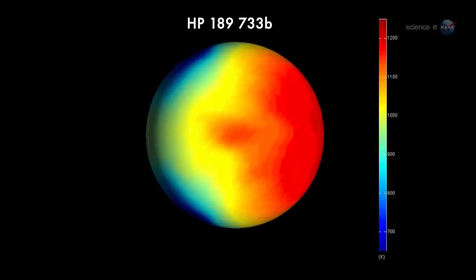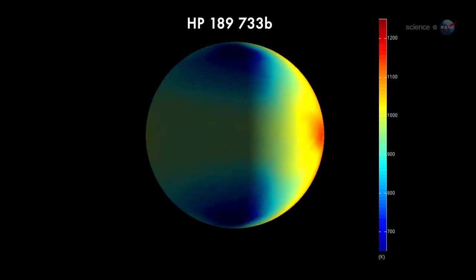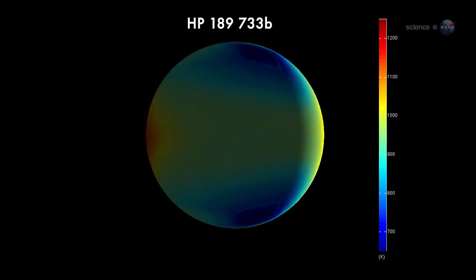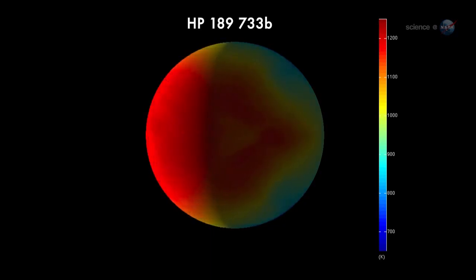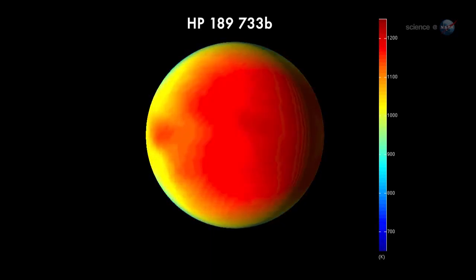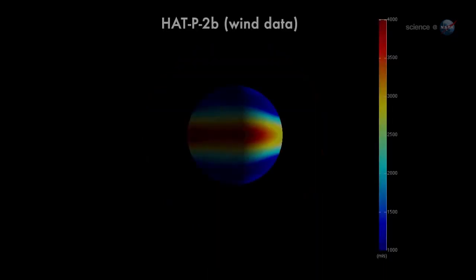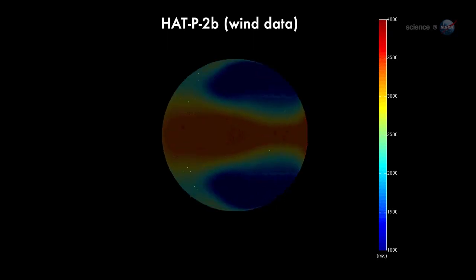These exoplanet maps may seem crude compared to what we're accustomed to on Earth, but they are a fantastic accomplishment considering that the planets are trillions of miles away. The maps show huge day-night temperature differences, sometimes exceeding 1000 degrees. Researchers believe these thermal gradients drive ferocious winds. On Hat P2, the winds are probably blowing thousands of miles per hour.